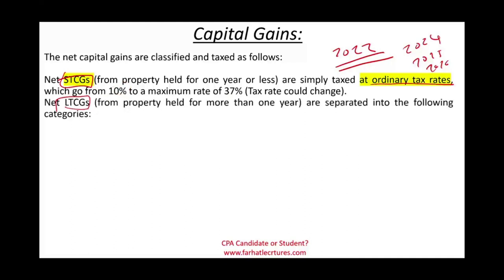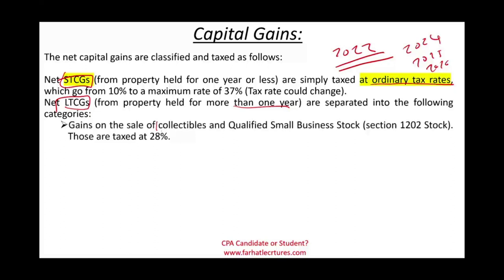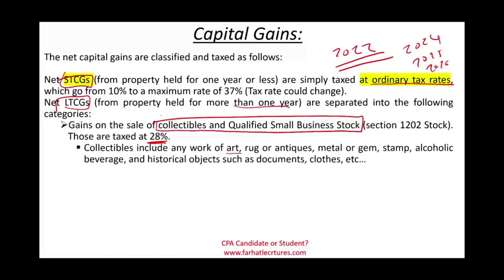Net long-term capital gains are treated differently and separated into several categories. The first is gains on sale of collectibles and qualified small business stock, held more than a year — taxed at 28%. Collectibles include artwork, rugs, antiques, metals, gems, stamps, alcoholic beverages, historical objects, documents, and similar items. So if you hold a qualifying collectible for more than a year and sell it, you're taxed at 28%.